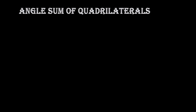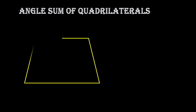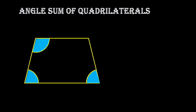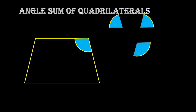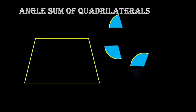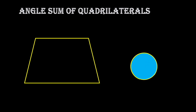Now let us discuss the quadrilateral. A quadrilateral is a four-sided polygon and it has four interior angles. When we bring together all four angles and join them at a common vertex, we get a full circle, which means the sum is 360 degrees. So the interior angle sum of a quadrilateral is 360 degrees.